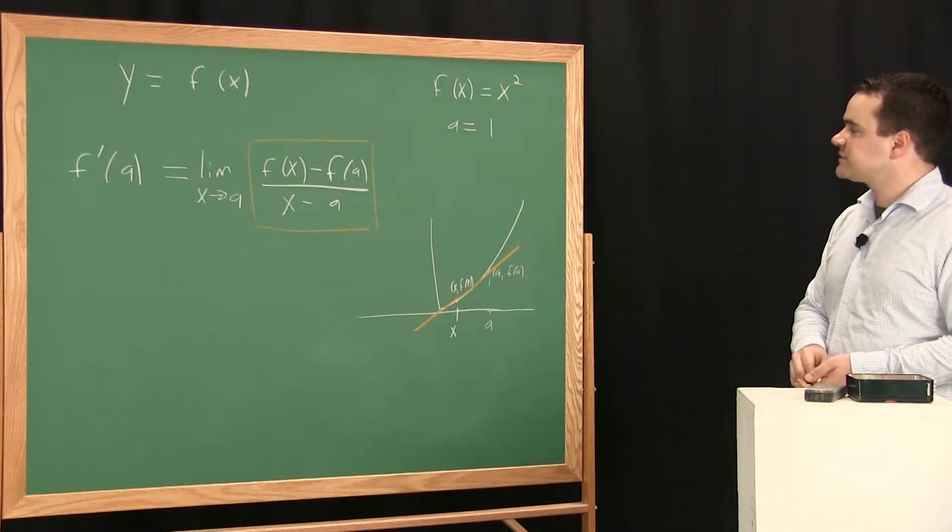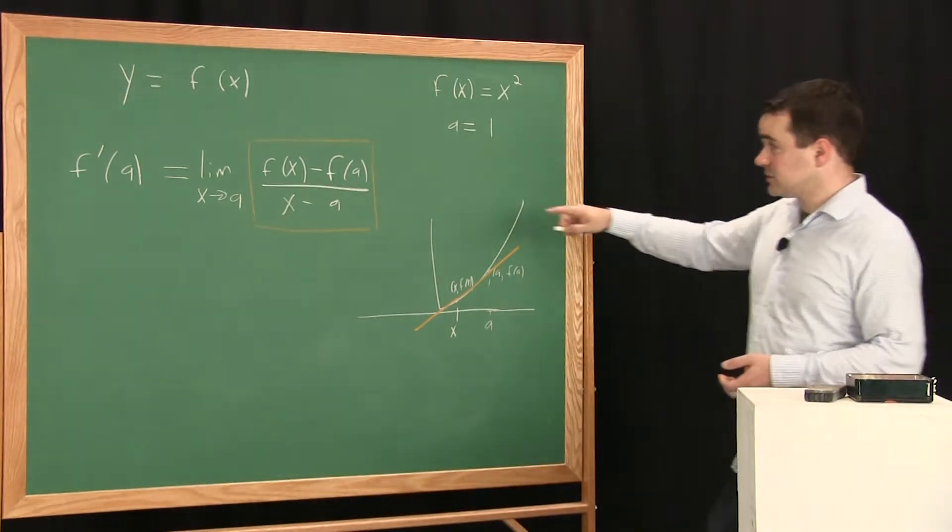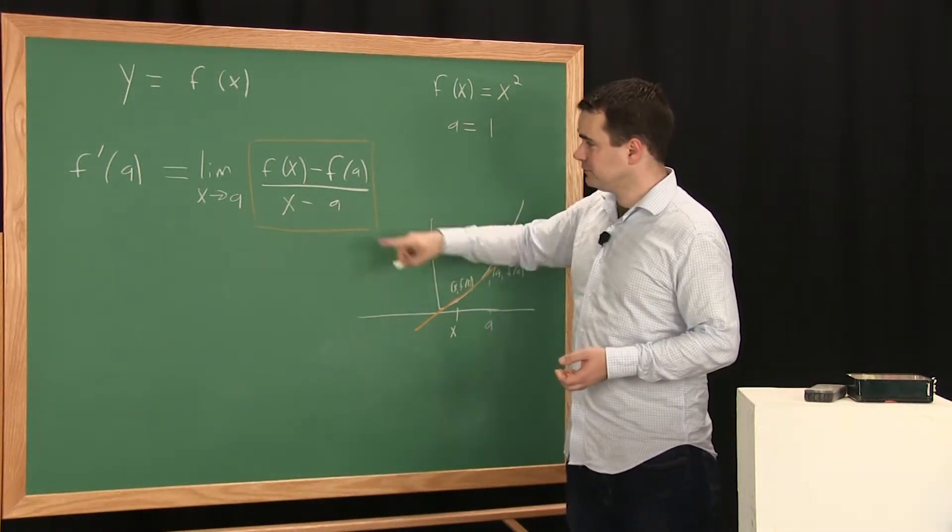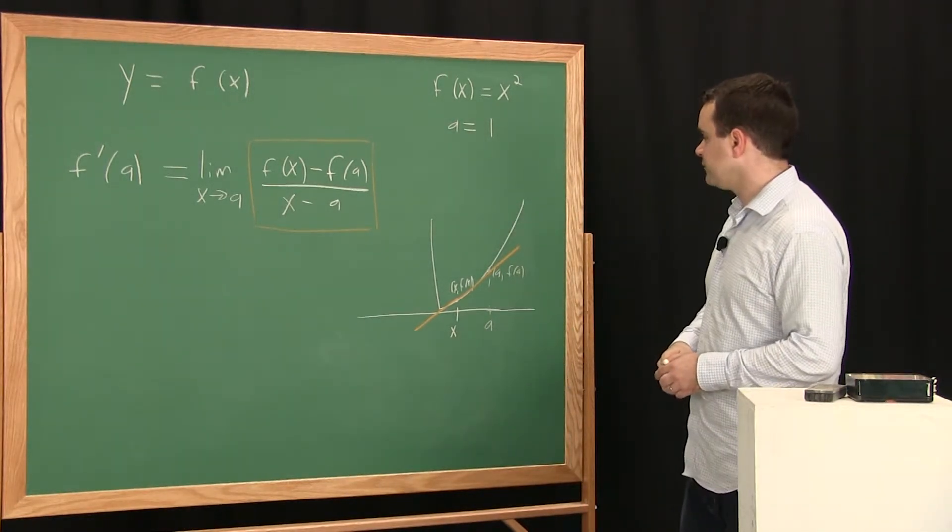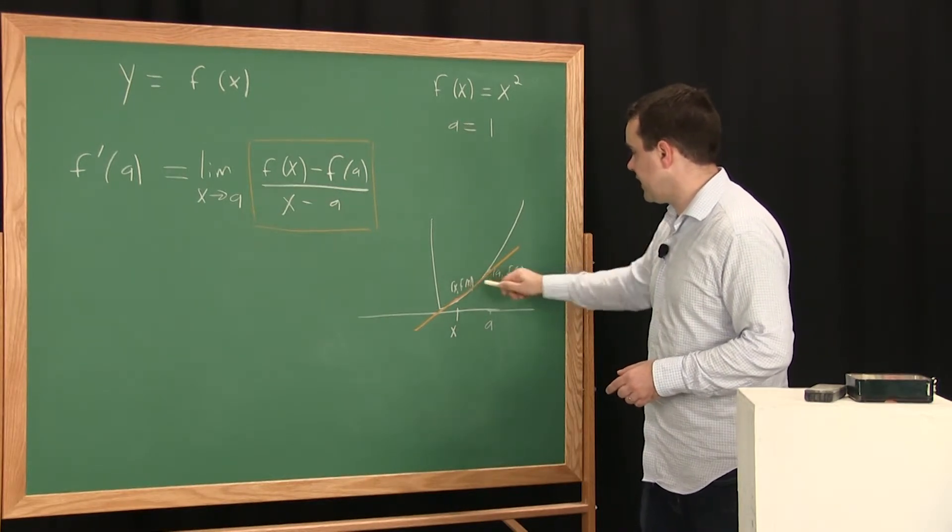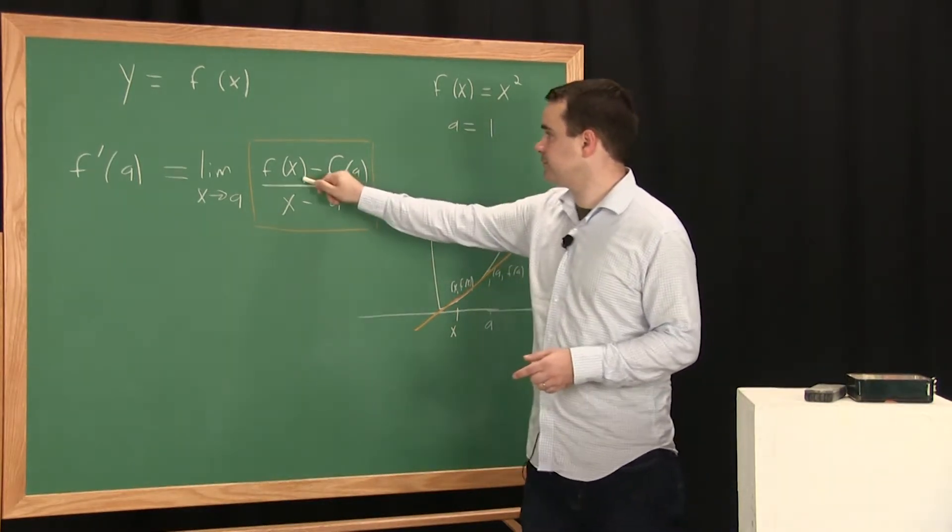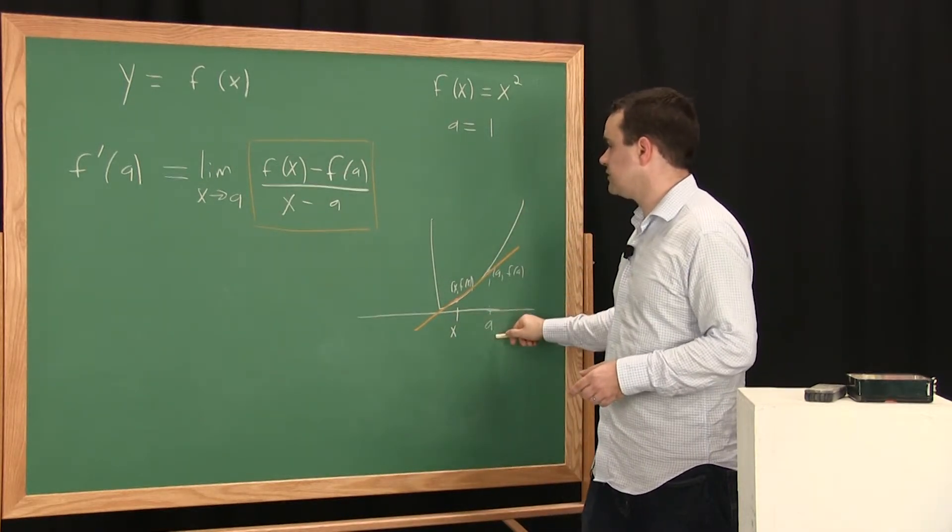And if you want to find the slope of that secant line, it's change in y values over change in x values. So the slope of that secant line is going to be f of x minus f of a divided by the change in x values x minus a.